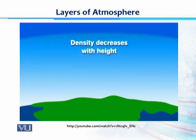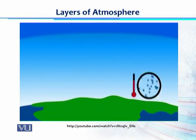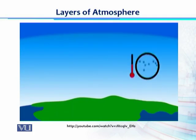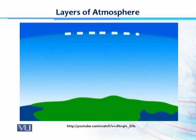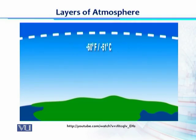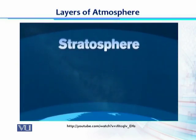In the troposphere, density decreases with height, meaning as you go up in altitude, the temperature decreases and the air becomes thinner. By the time you reach the top of the troposphere, or tropopause, the temperature will decrease to about minus 60 degrees Fahrenheit, or minus 51 degrees Celsius.